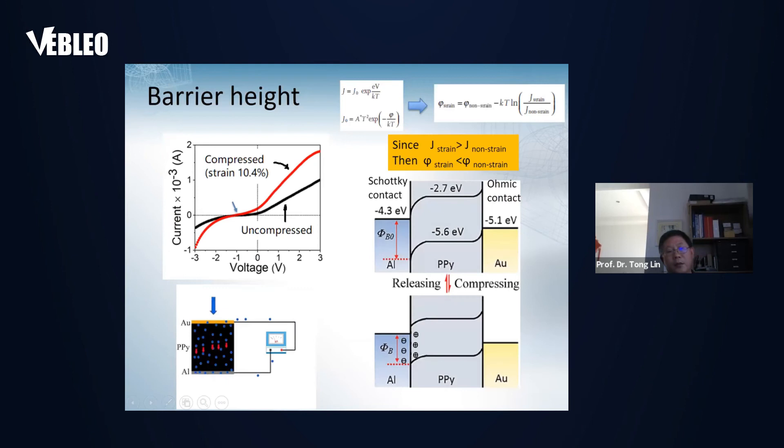In literature, some people already reported PPY polypyrrole forms a Schottky contact with aluminum, but it forms an ohmic contact with gold. All devices should contain a single Schottky junction. We can test the IV curve. Through IV curve, we can find a rectifier effect. This comes from the Schottky junction. Under compression, the rectification rate increased.